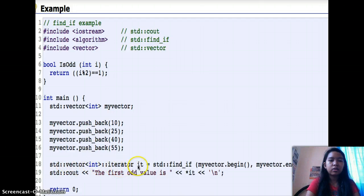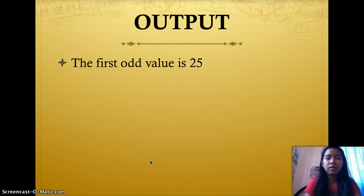std::vector<int>::iterator it equals std::find_if myvector.begin, myvector.end, isOdd. std::cout the first odd value is *it, return 0. So the output here is the first odd value is 25.